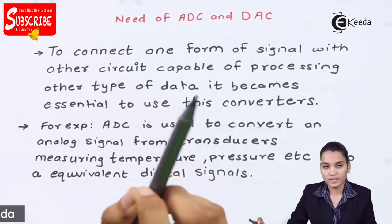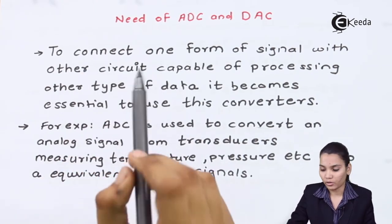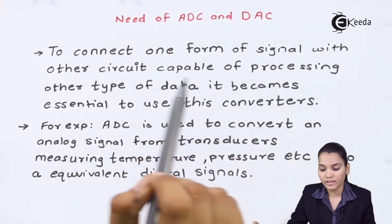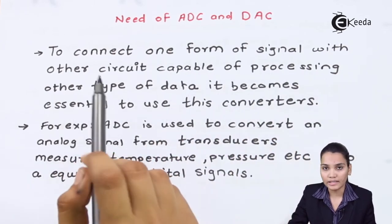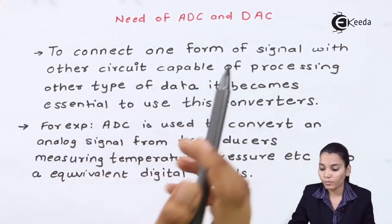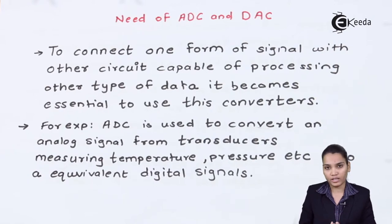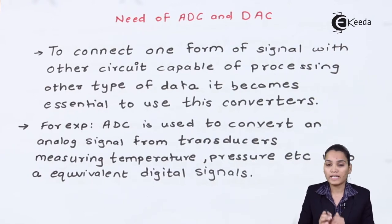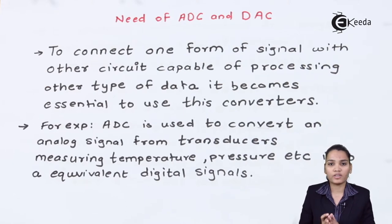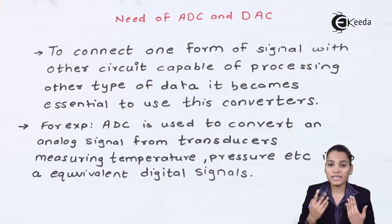The first need is very important: to connect one form of signal with another circuit capable of processing the other type of data becomes very difficult. So we require ADC and DAC converters, and both converters are needed as per the application.